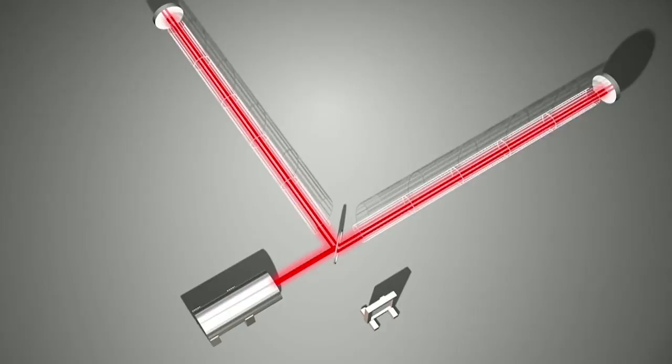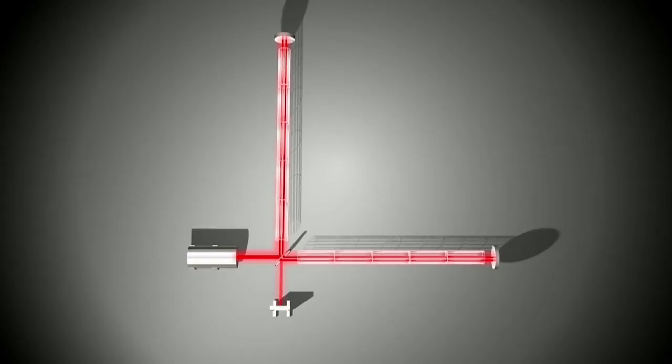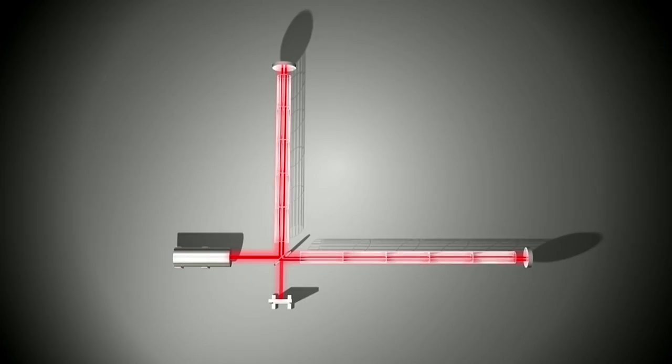The light bounces around about 200 times, comes back, recombines. And in that recombination, if there's a gravitational wave, what it will do is it will stretch and compress the arms of the interferometer in a diametrically opposed way.